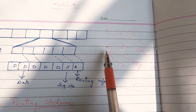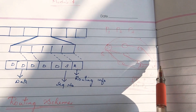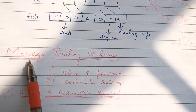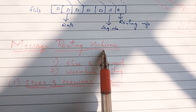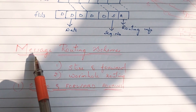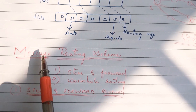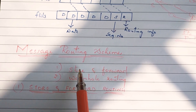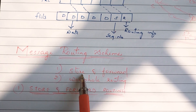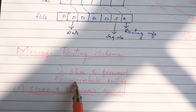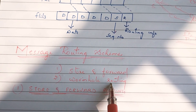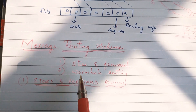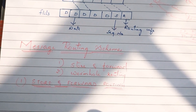We have two routing schemes. The next topic is the message routing scheme. These two schemes are store-and-forward and wormhole routing. First, we will discuss store-and-forward routing.